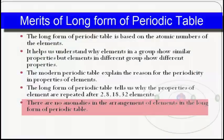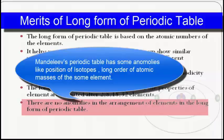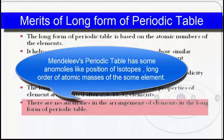The next merit is that there are no anomalies in the arrangement of elements in the long form of the periodic table. Comparing this to Mendeleev's periodic table, which had anomalies such as the incorrect position of isotopes and the wrong order of atomic masses of some elements, the long form of the periodic table has no such anomalies in the arrangement of elements.